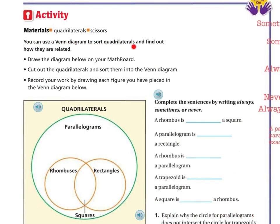So you can use the Venn diagram to sort quadrilaterals and find out how they're related. Draw the diagram below on your math board, or you can just draw on your actual book. Cut out the quadrilaterals and sort them in the Venn diagram. I'm just going to have you draw them. Record your work by drawing each figure you have placed in the Venn diagram below.